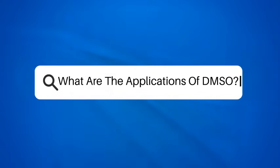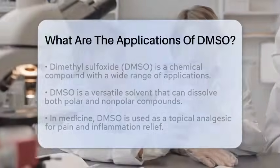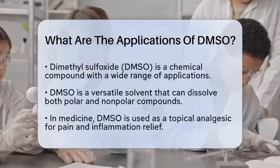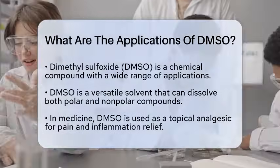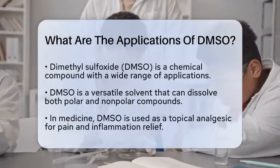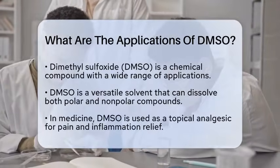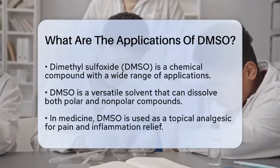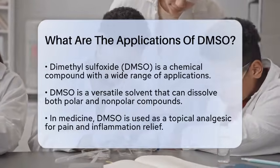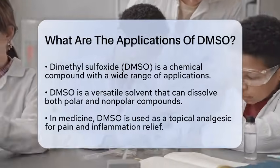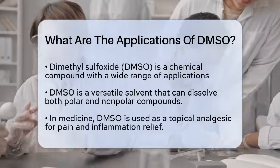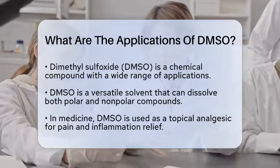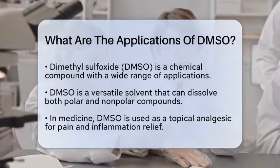What are the applications of DMSO? Dimethylsulfoxide, commonly known as DMSO, is a chemical compound that has a wide range of applications in various fields. This versatile solvent is known for its ability to dissolve both polar and nonpolar compounds, making it useful in numerous scientific and medical contexts.